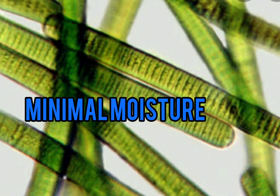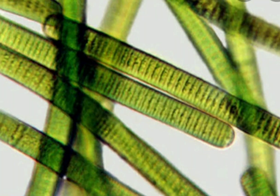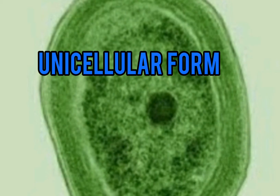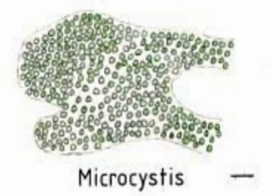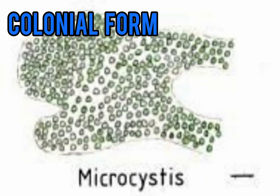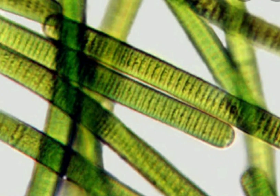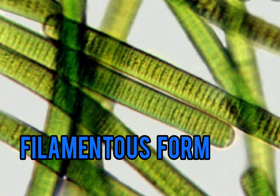There are three forms of cyanobacteria: unicellular form like Crococcus, colonial form like Mycosystis, and filamentous form like Nostoc or Oscillatoria.